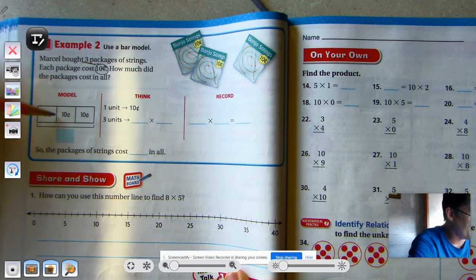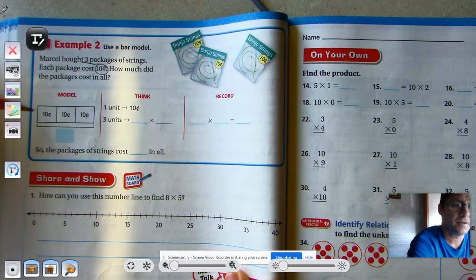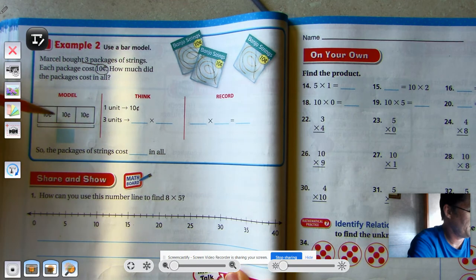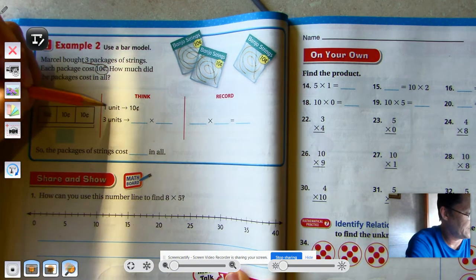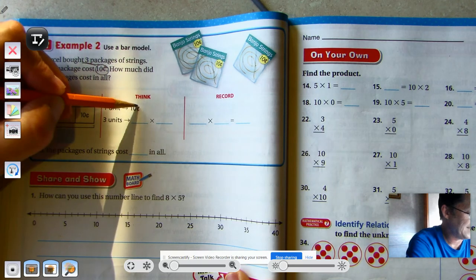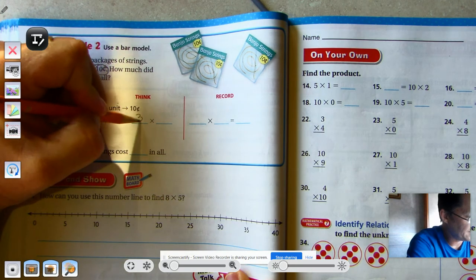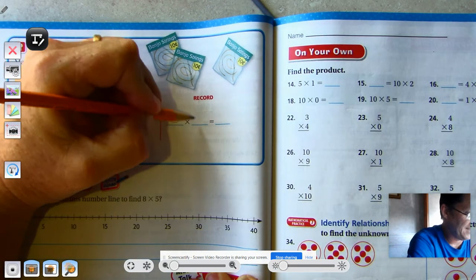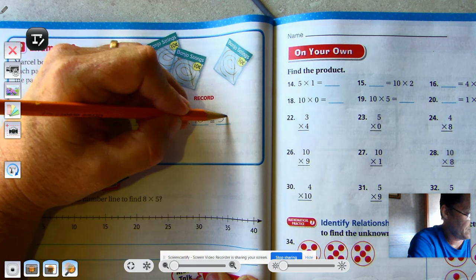So in our bar model, we would have three boxes because he bought three packages. There would be 10 cents in each one because each package costs 10 cents. And so it says think of one unit as 10 cents. Three units would be three times 10.